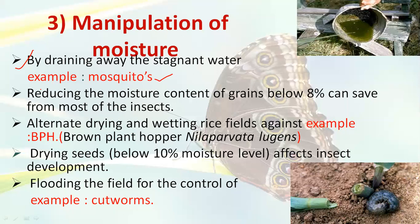Most insects attack stored grains when moisture content is more than 10 to 15 percent. There are chances that weevils, rice mill moth, and different stored grain insects will attack due to higher moisture percentages. Reducing the moisture content in grains to near 8 percent can save stored products from damage by different insects.